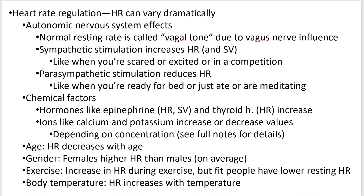How do we regulate heart rate? Your autonomic nervous system does it all the time. Those cardio-acceleratory and cardio-inhibitory regions are what I'm talking about here. At your normal resting rate, it's what's called vagal tone because of the vagus nerve. Experiments where they've cut the vagus nerve show the heart rate will shoot up to around 100 — so don't cut your vagus nerve. Sympathetic stimuli — like exciting stuff, a scary movie, athletic competition — will cause sympathetic stimulation and result in increased heart rate and increased stroke volume. Parasympathetic stimulation, like when you've just eaten or are getting ready for bed, should lower heart rate.